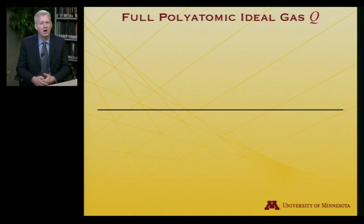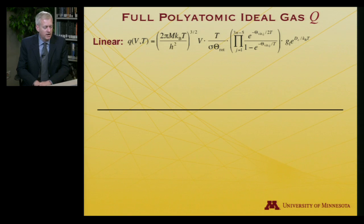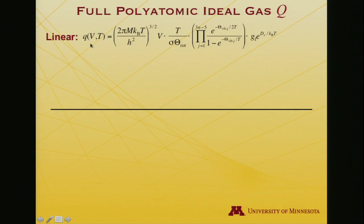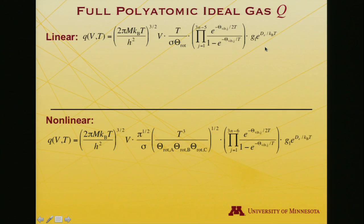Let's put all of it together and look at the ensemble partition functions for the full polyatomic ideal gas. In the linear case, we're going to have, for the molecular partition function, the translational component, the rotational component, the vibrational, and the electronic. In the nonlinear case, the difference is, I'll express it most generally for an asymmetric top, so the rotational piece looks a little different, and the number of normal modes in the vibrational piece is different.